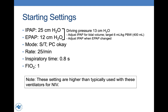I recommend the spontaneous timed mode, although pressure control mode is also acceptable if available. I suggest a starting respiratory rate of 25 breaths per minute, an inspiratory time of 0.8 seconds, and an FiO2 of 1.0. It is important to note that these settings are higher than typically used with these devices for non-invasive ventilation. In this setting, we are using the device for acute respiratory failure. Many of these patients will also have ARDS, so we are setting the ventilator to mimic how we would ventilate an ARDS patient using an ICU ventilator.